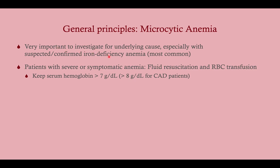It's very important to investigate for the underlying cause. The general principle of treatment is that if a patient has symptomatic anemia or very severe anemia — namely below seven or eight — you're going to do fluid resuscitation and red blood cell transfusion. Keep your serum hemoglobin over seven, but over eight for older patients or patients with known coronary artery disease.